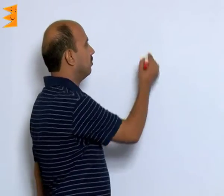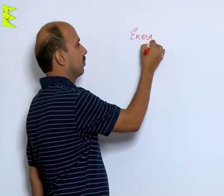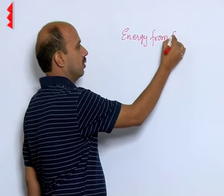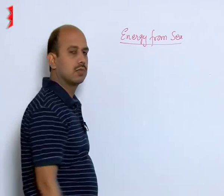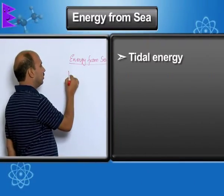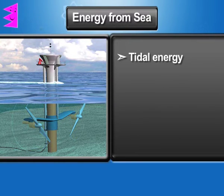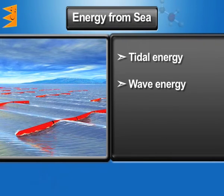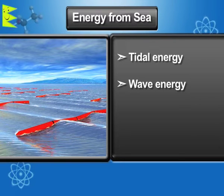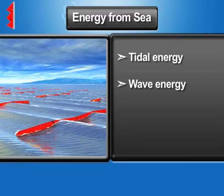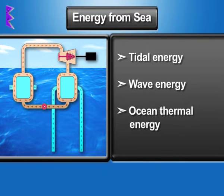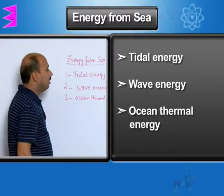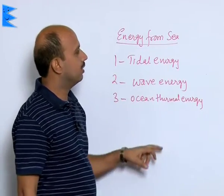Now we will do energy from the sea. In this case, there are three parts. First one is tidal energy, second one is wave energy, and the third one is ocean thermal energy. These are the three forms in which we can get energy from the sea.